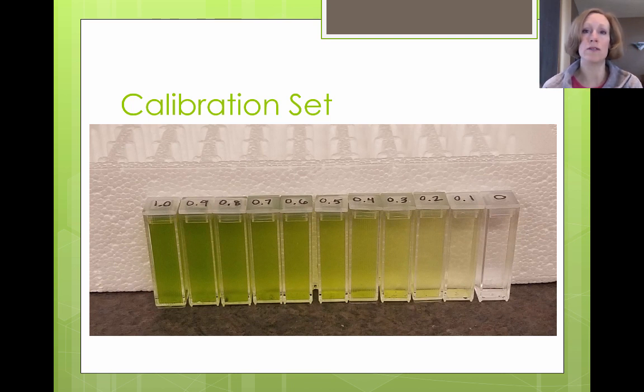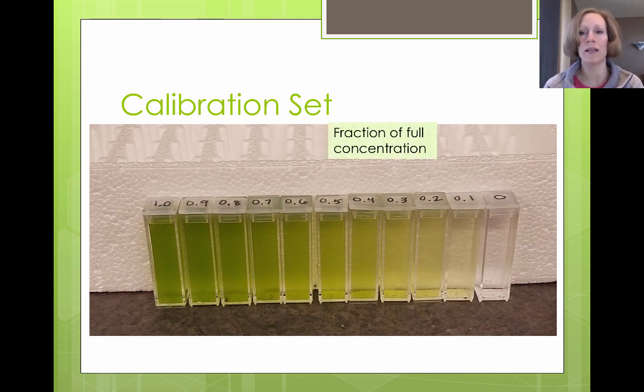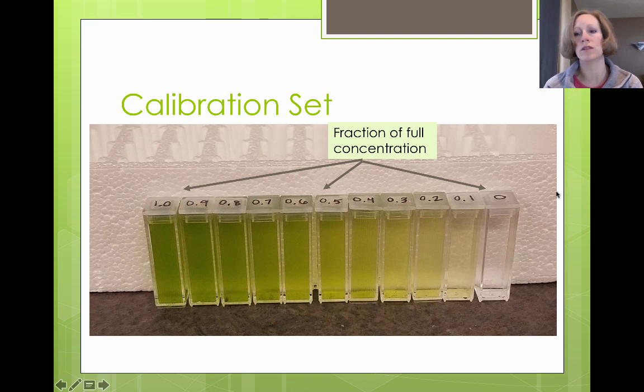So what we need to do is have a calibration. We calibrate to relate the resistance to the known set of concentrations. So here I have pictured a calibration set, and the numbers on top of each of these little cuvettes is the fraction of the full concentration. Your instructor will have grown algae for about two weeks to get it up to full strength, its maximum concentration, and then used that to create this calibration set with different dilutions. For example, here you can see 1.0, that would be full concentration, all the way down to 0.5, which is half concentration, all the way to zero, where there's no algae, this is just pure water. So we're going to use this because we know what the concentration is, and we're going to create a calibration curve with measurements of resistance.